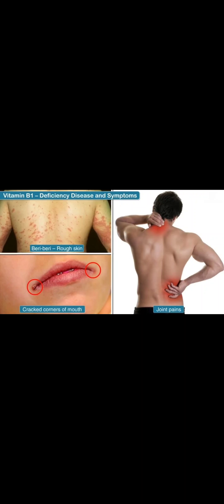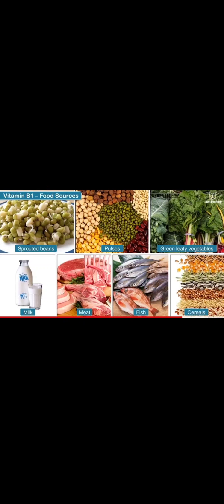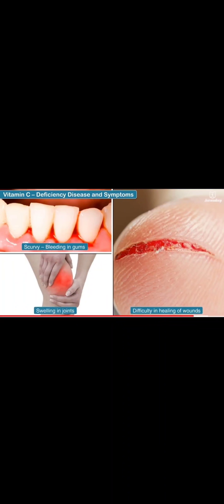The disease caused due to the lack of vitamin B is beriberi. It is a disease which causes weak muscles, extreme weakness, and paralysis in body parts. This disease is characterized by a cracked corner of the mouth. To recover from beriberi, we should take vitamin B-rich foods such as sprouts, pulses, green leafy vegetables, milk, and cereals.